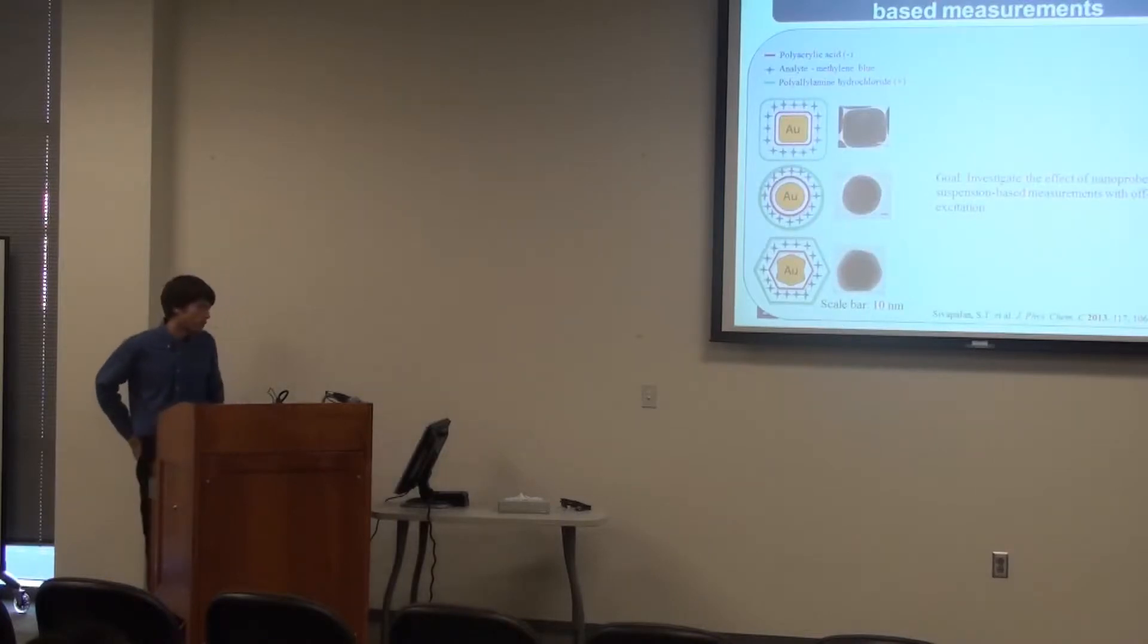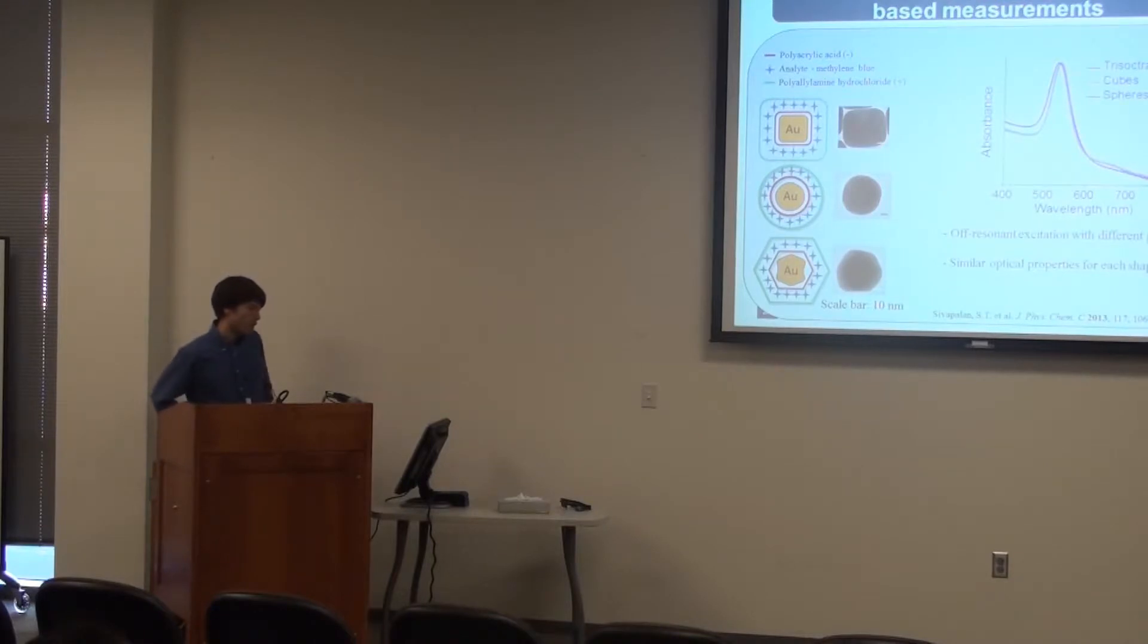So in addition to looking at how nanoprobe optical interactions can occur, we wanted to look at what kind of shape dependence there is for suspension-based measurements. So what we did is we synthesized three different shapes of nanoprobes: cubes, spheres, and tris octahedra. And we wanted to ensure that they had similar optical properties. So basically what you see here is that their absorbances are essentially identical.